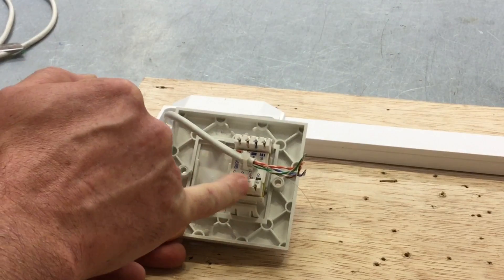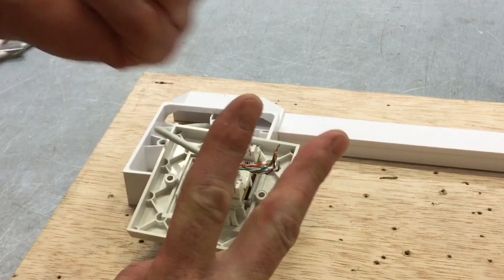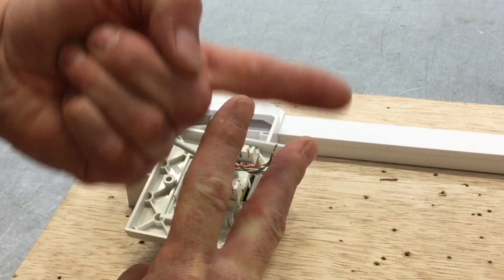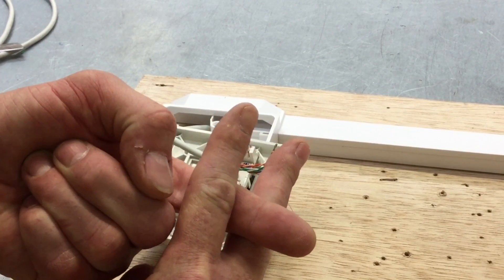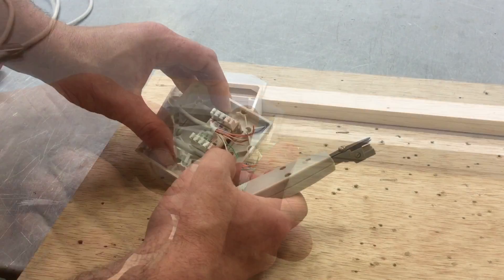So in other words, these little V marks here, again we don't strip the insulation off. As we've forced it down into there, the conductor itself cuts into the V of that connection, so in other words uses cable displacement. The conductor's forced into a reasonably sharp part where it opens up the insulation to make the connection.